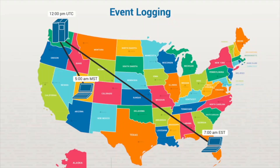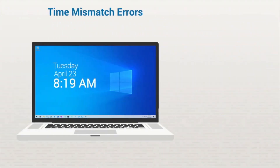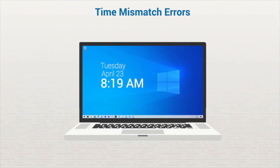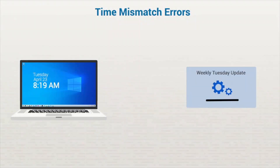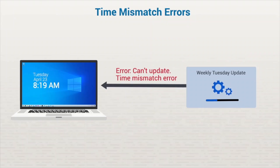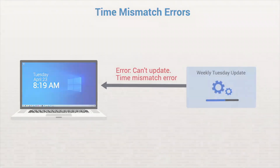There are also instances where a program won't function properly if the time is wrong. For example, if a program is performing an update, but the time on the device is wrong or set in the past, the update could fail and cause all sorts of issues.